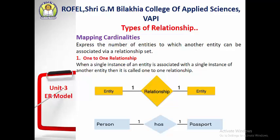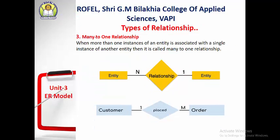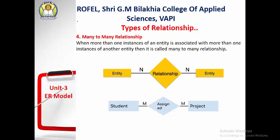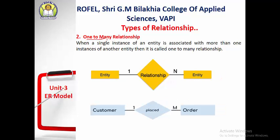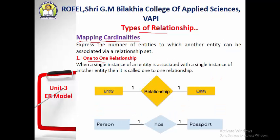Now, the different types of relationship are also called mapping cardinalities of the ER diagram — a very important concept. There are four different types of relationship or mapping cardinalities: one-to-one, one-to-many, many-to-one, and many-to-many. Mapping cardinality means it expresses the number of entities to which another entity can be associated via a relationship.